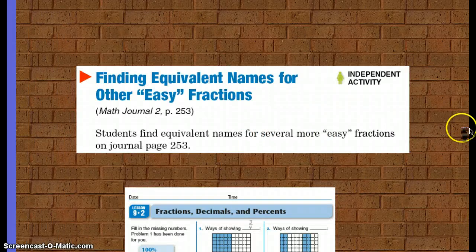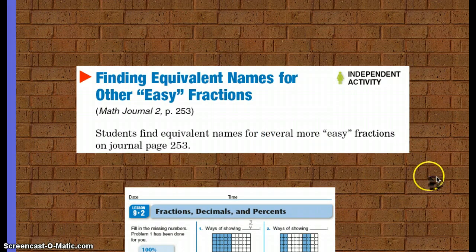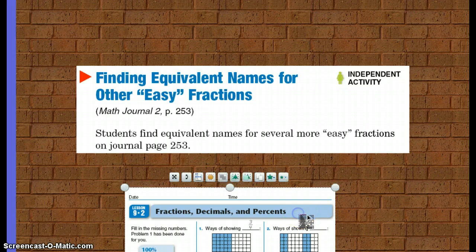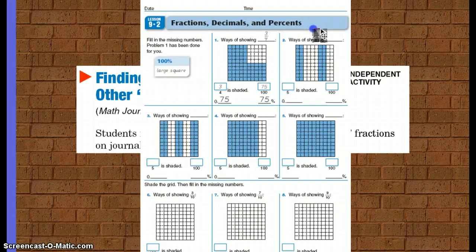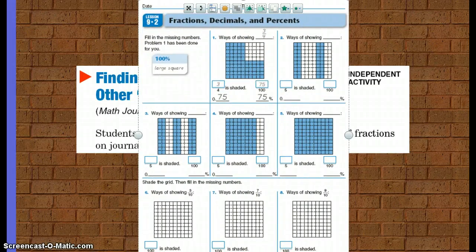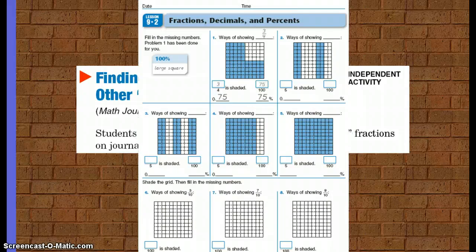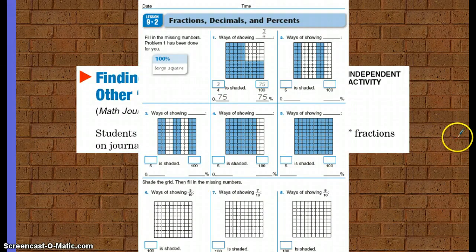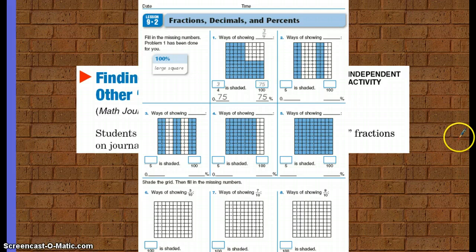Finding equivalent names for other easy fractions. Math journal page 253. On this page, you're going to find that you're going to have to fill in the missing numbers, and problem one has been done for you. It's always a good idea to look at that problem, because it's going to help you with all your other problems.